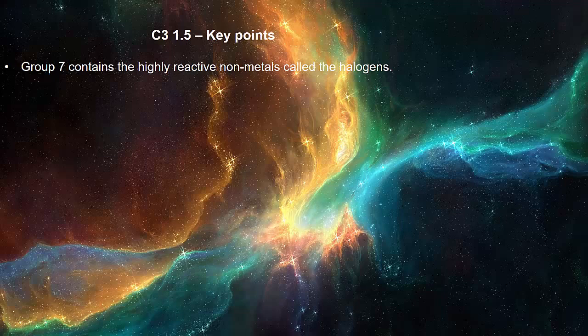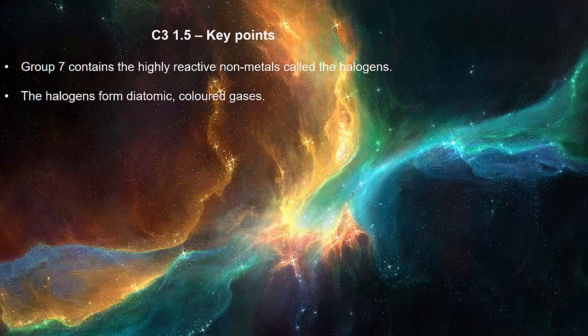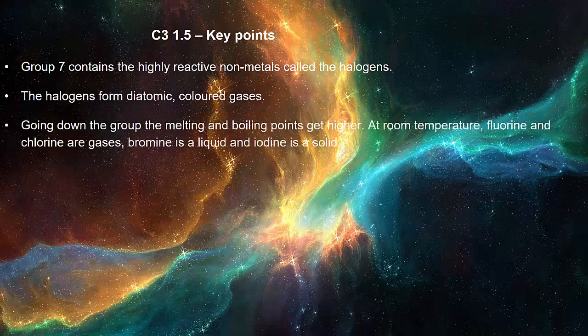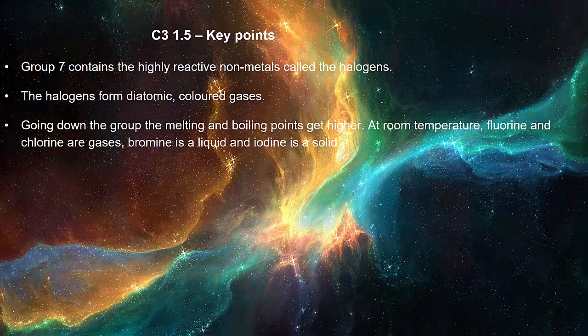Group 7 contains the highly reactive nonmetals called the halogens. The halogens form diatomic coloured gases. Going down the group the melting and boiling points get higher. At room temperature fluorine and chlorine are gases. Bromine is a liquid and iodine is a solid.